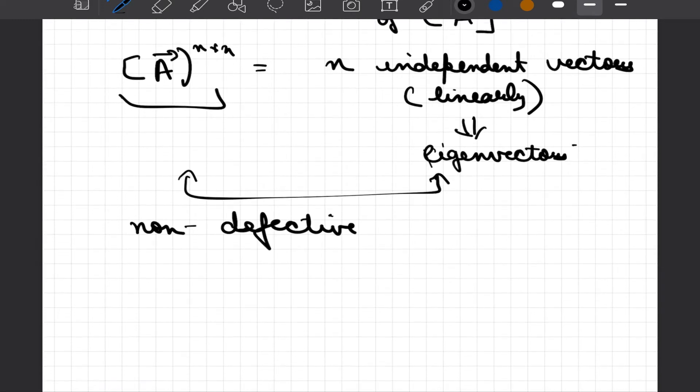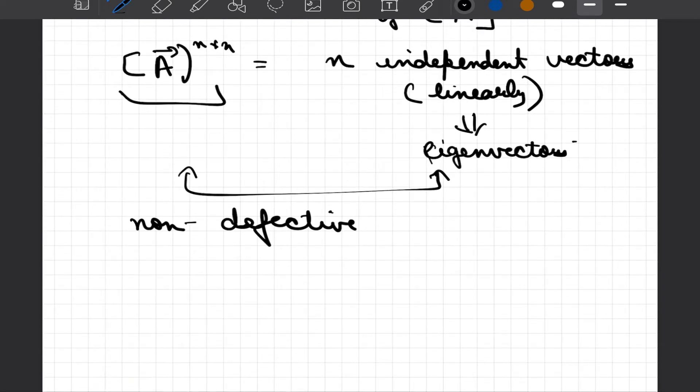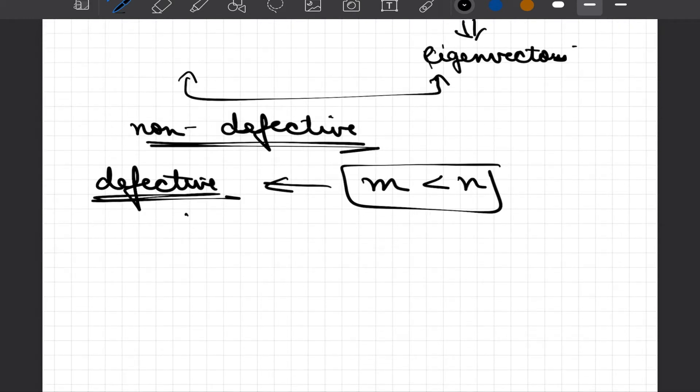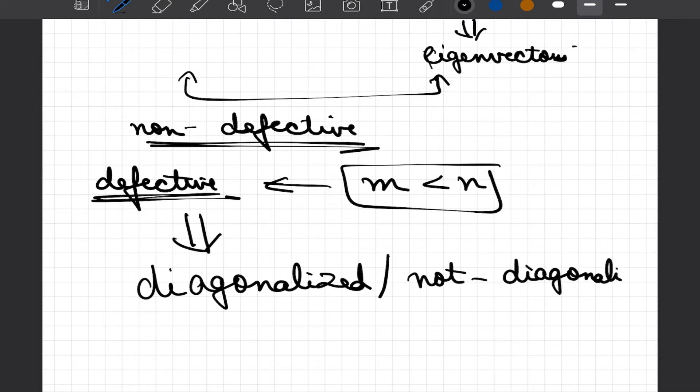However, if we have n cross n matrix and we have m number of independent vectors where m is less than n, we would say that our matrix is defective. Whenever we have matrix classified as defective or non-defective, that essentially would govern whether our matrix can be diagonalized or not.